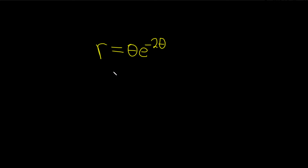Hi everyone. In this problem we have a function of theta. So r is equal to theta times e to the negative 2 theta. And the question is to find the derivative.